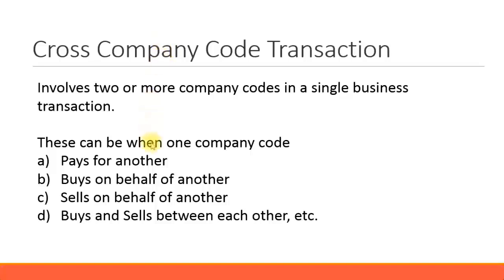Simply put, when one company pays on behalf of another, it's a cross-company code transaction. It also applies when one company code buys on behalf of another — this may also be called central procurement — or when one company sells on behalf of another, which can be called central sales.